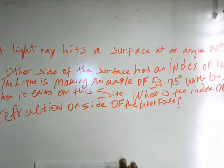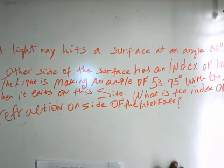Okay, I'm going to show you this optics problem. A light ray hits a surface at an angle of 86 degrees. The material on the other side of the surface has an index of refraction of 1.141, and the light is making an angle of 53.75 degrees with the surface when it exits on this side. What's the index of refraction on the side of the interface?